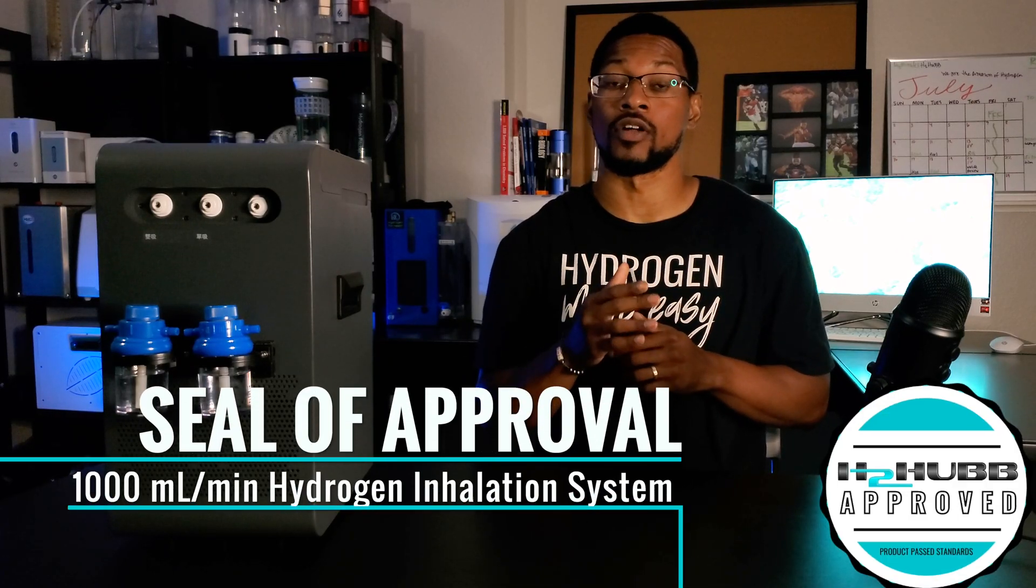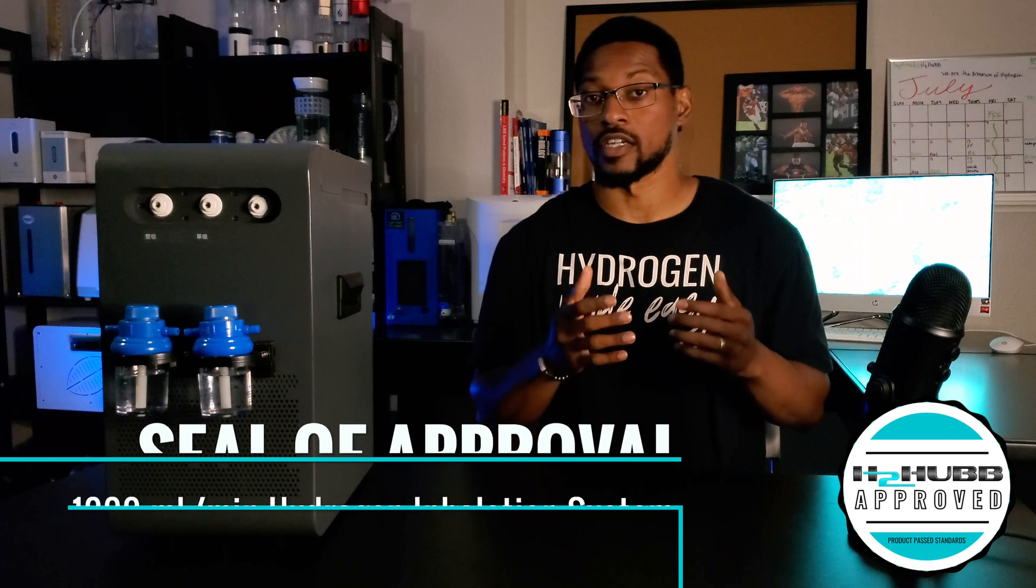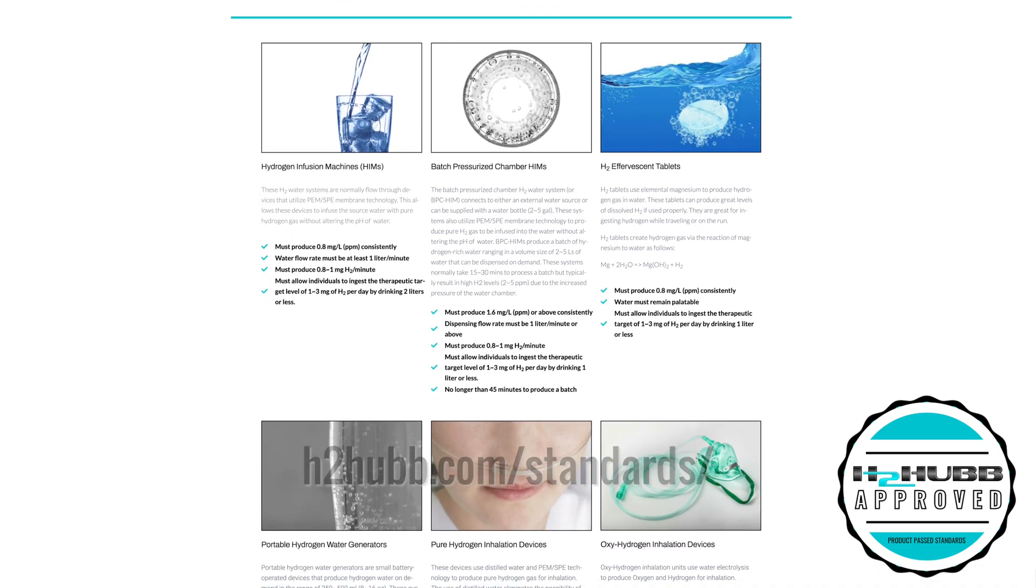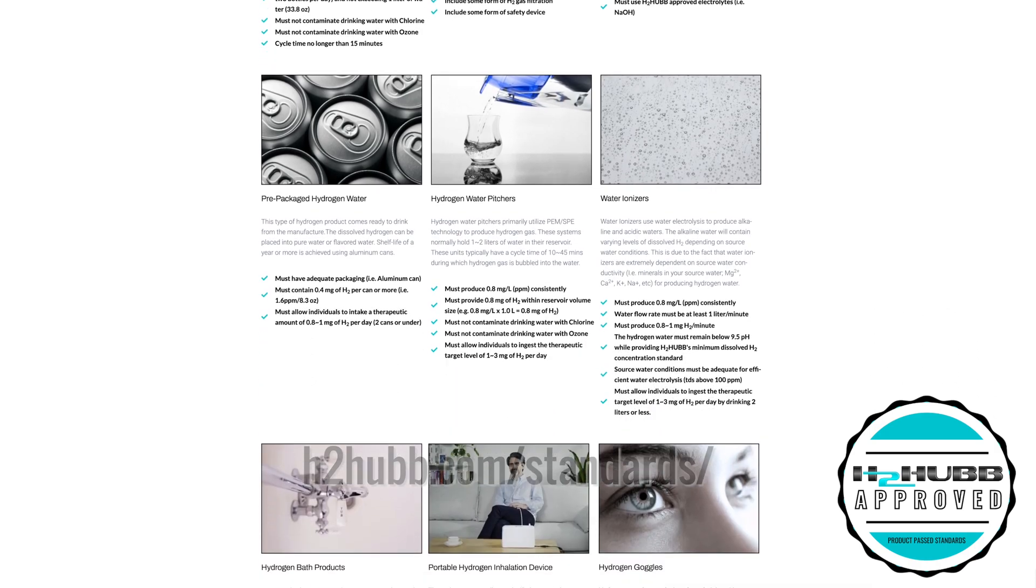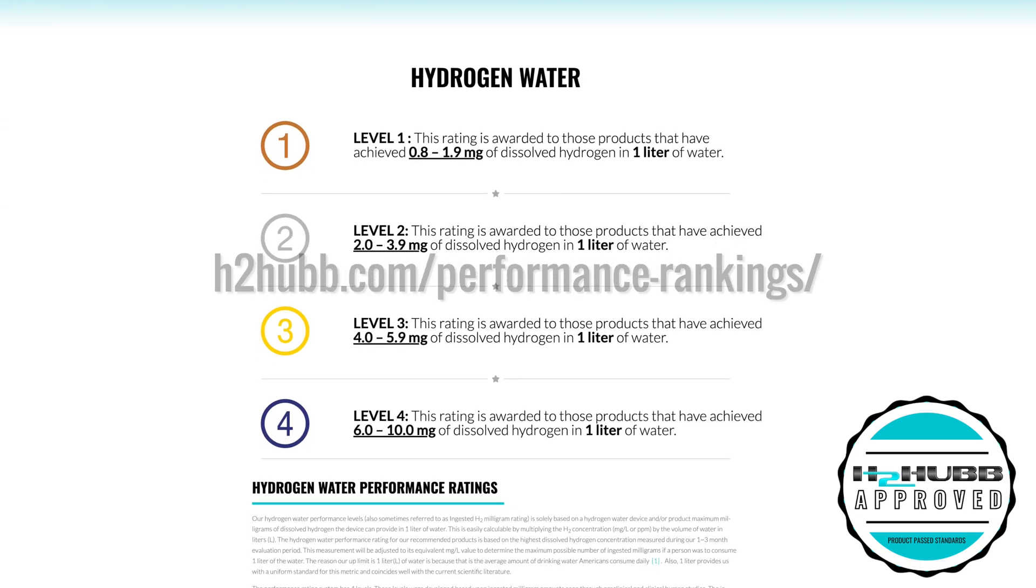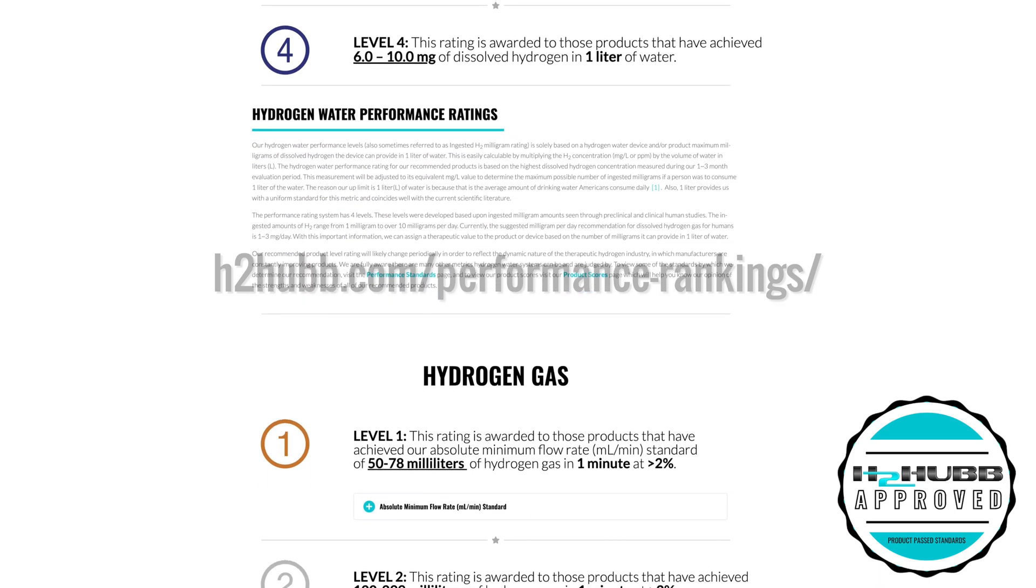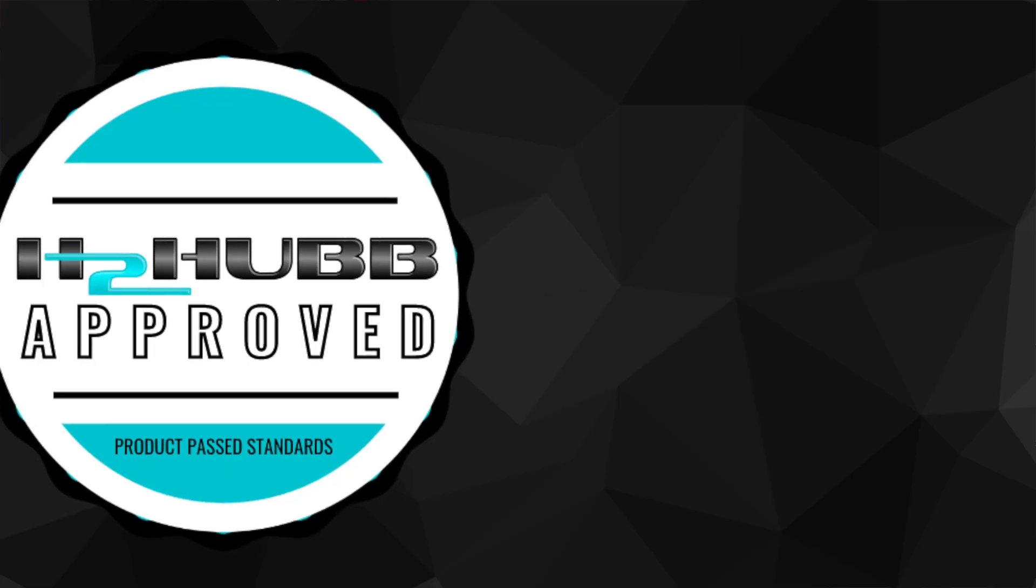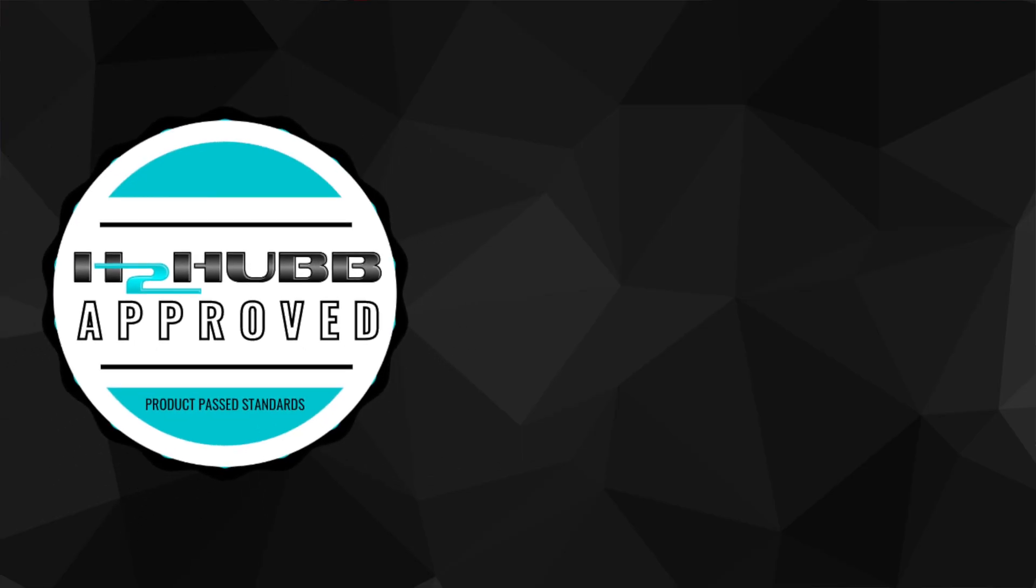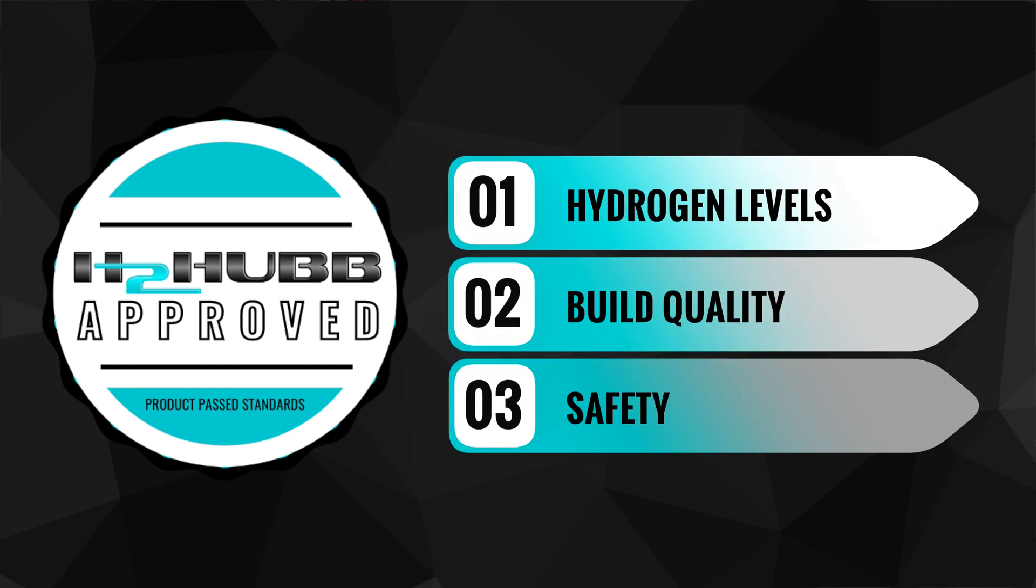Now let's go ahead and discuss our seal of approval. Here at H2 Hub we independently and third-party test hydrogen products against our in-house performance standards. You can actually see these standards on our website. We have standards across a broad range of hydrogen products, and then after we do our testing we rank the product. You can also see our performance rankings and what they mean on our website, and we do all of this to help individuals make an informed decision about the hydrogen product they want to purchase. Through our evaluation we try to confirm three main things: if the product provides therapeutic levels of hydrogen gas, if it's well built, and if it's safe to use.